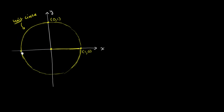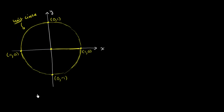What about back here? Here our x value is negative 1. We've moved 1 to the left, and we haven't moved up or down. So our y value is 0. And what about down here? We've gone a unit down, or one below the origin, but we haven't moved in the x direction. So our x is 0, and our y is negative 1.